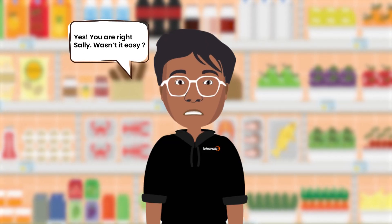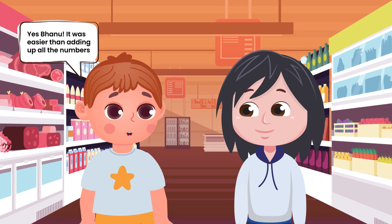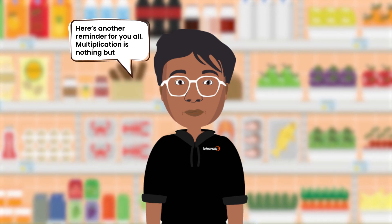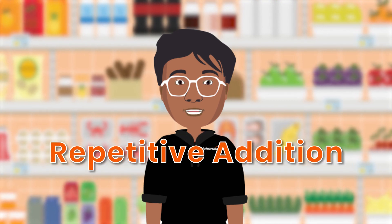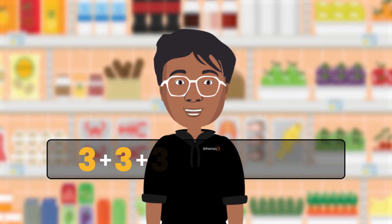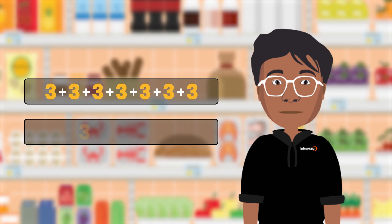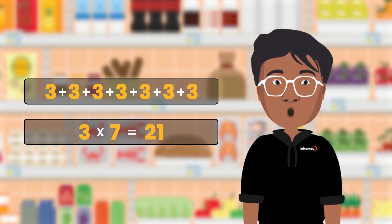You are right, Sally. Wasn't it easy? Yes, Bhanu. It was easier than adding up all the numbers. Here's another reminder for you all: multiplication is nothing but repetitive addition. For example, 3 plus 3 plus 3 plus 3 plus 3 plus 3 plus 3 is 3 added 7 times, which is 21. Either 3 multiplied 7 times or 7 multiplied by 3 would give us the same result.